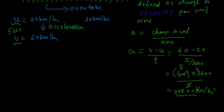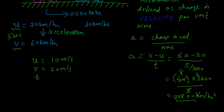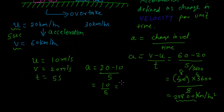Let us take another example where values are a bit smaller — usually data is given in meters per second. If initial speed u is 10 m/s, you increase the speed to 20 m/s, and the time taken is 5 seconds, then acceleration = (20 - 10) / 5 = 10 / 5 = 2 meter per second squared.